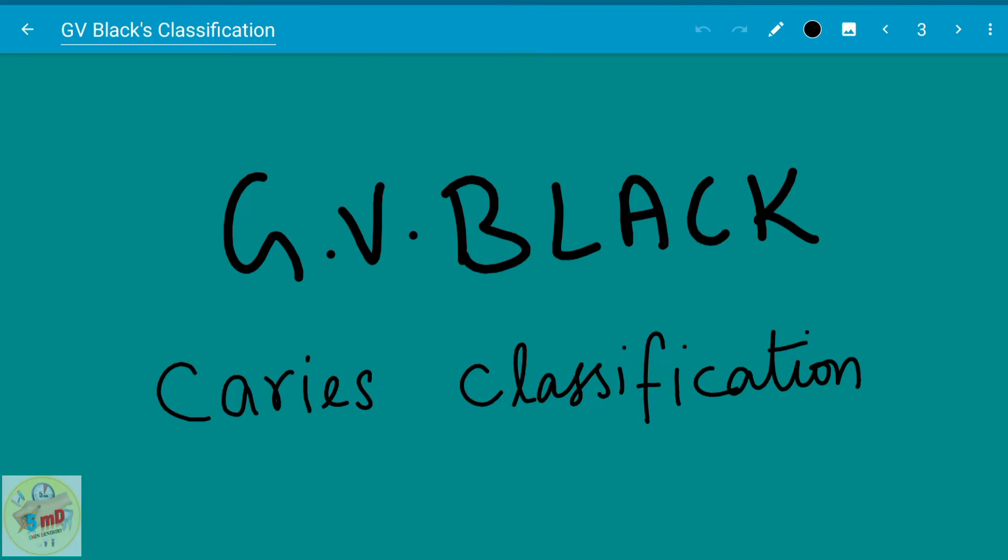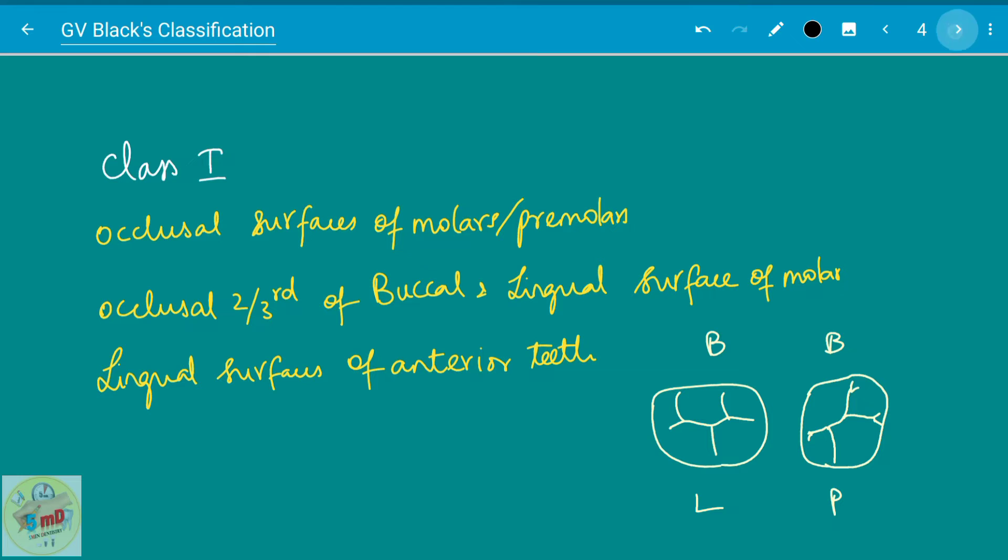So let us move to the proper GV Black's caries classification. Dental caries according to GV Black morphologically occurred in these common spots. Depending on the frequency of occurrence, he had ordered it into six sites.